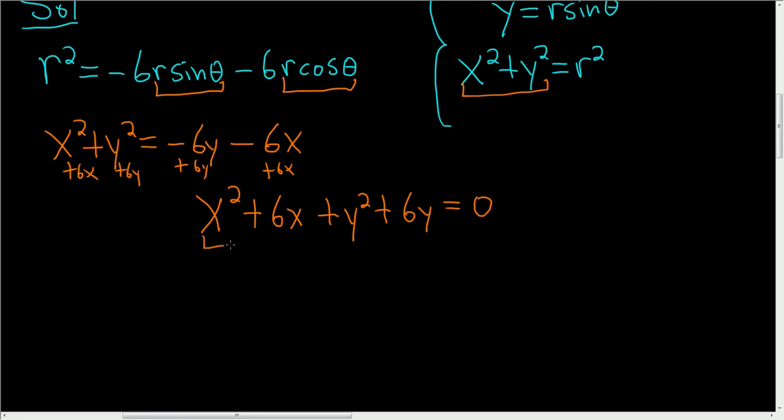Now we'll go ahead and complete the square two times. So when you complete the square you look at the coefficient of the linear term, so this is the linear term because it has a 1 here. So we look at the 6, we divide it by 2 and we square it. So 6 over 2 is 3, 3 squared is 9. So we're going to add 9 to both sides of this equation.